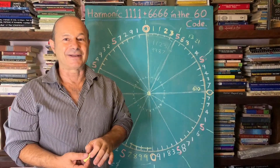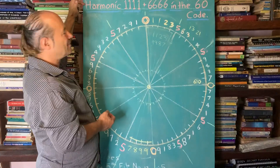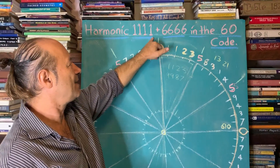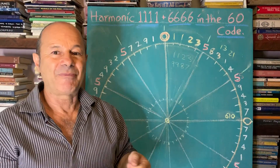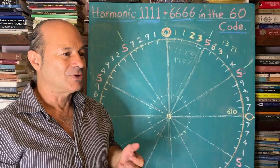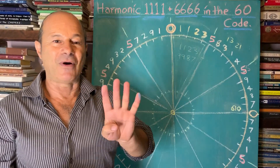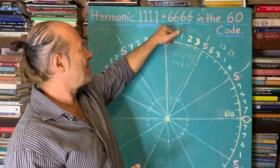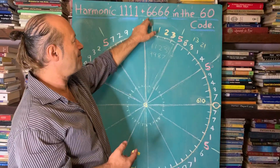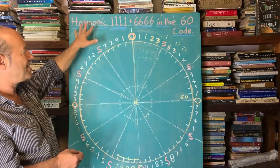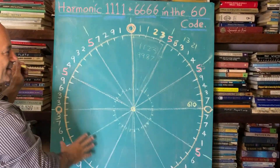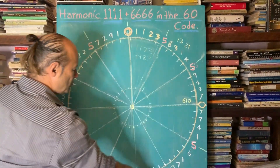I've discovered something really special inside of this, which is the title of this talk: Harmonic 1111. That number 1111 is powerful because one represents leadership, authority, power — like when you're playing poker and you get four aces, it trumps everything. And there's another code hidden invisibly inside the 60 code, which is the magic number 6666.